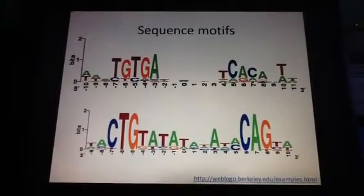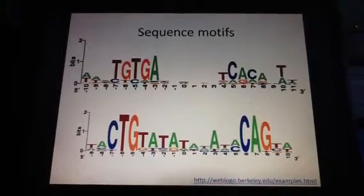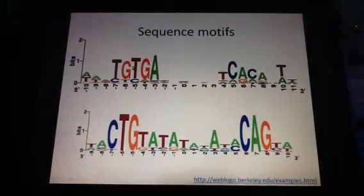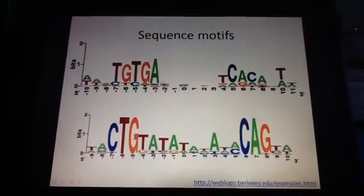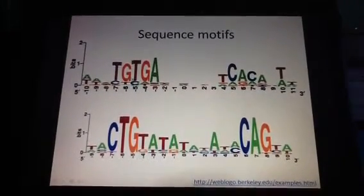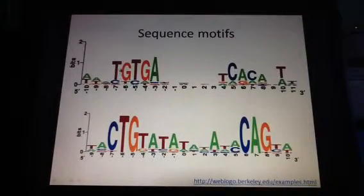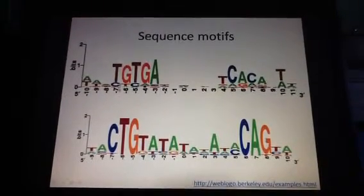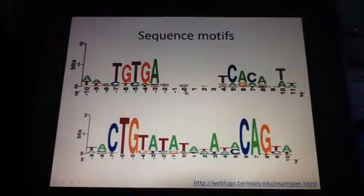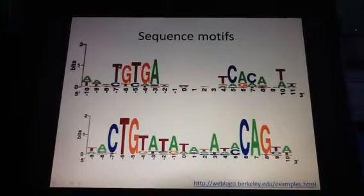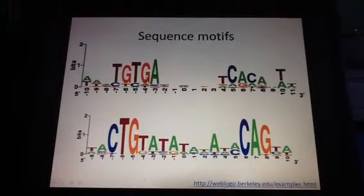And when these so-called transcription factors bind to these motif sequences, it signals that the DNA following these regions should be translated into proteins. So these motifs, for instance, say that at this sequence position — minus 7 from a certain origin — has a consensus residue of T, A, followed by G, followed by T, followed by T, followed by G.